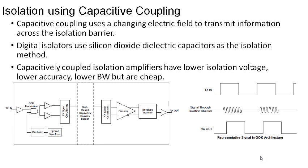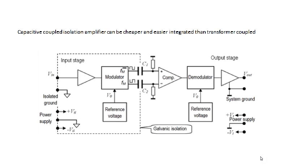Isolation using capacitive coupling works by coupling the signal through a changing electric field to transport information across the isolation barrier. For digital signals, silicon dioxide capacitors are commonly used in capacitive coupling. In the block diagram, the TXIN signal is transmitted to RXOUT using on-off keying. When the signal is present, an oscillator converts it to a high frequency signal sent across the capacitor barrier, and a receiving detector converts the information back to the required signal.